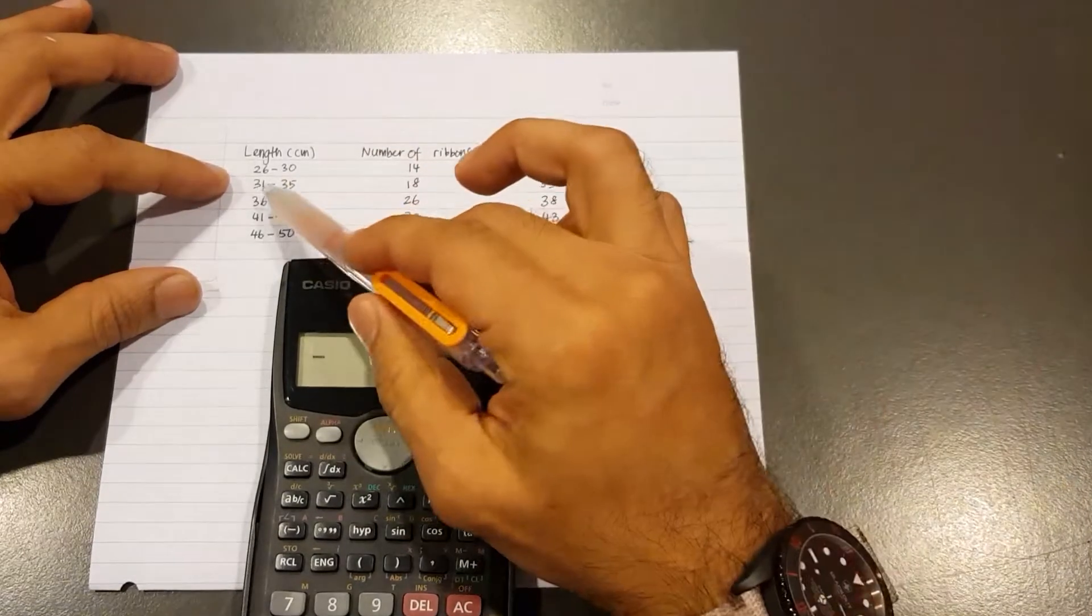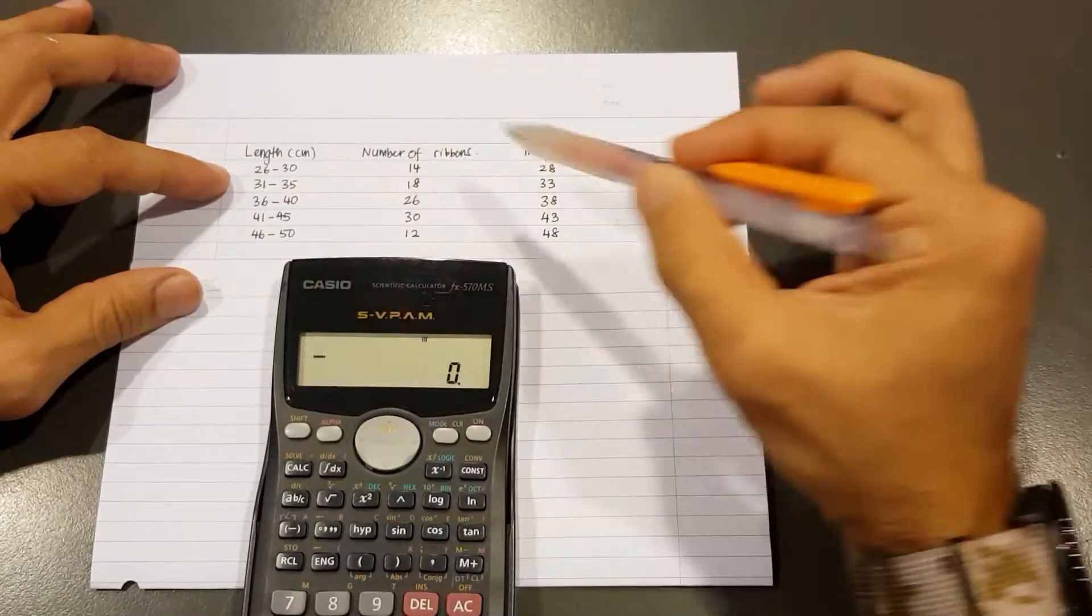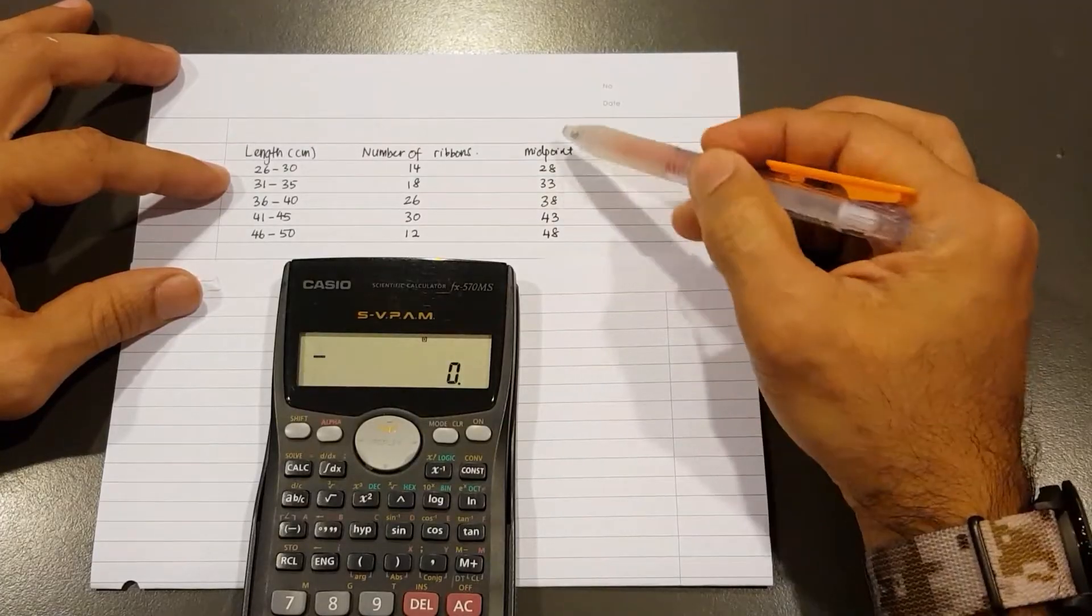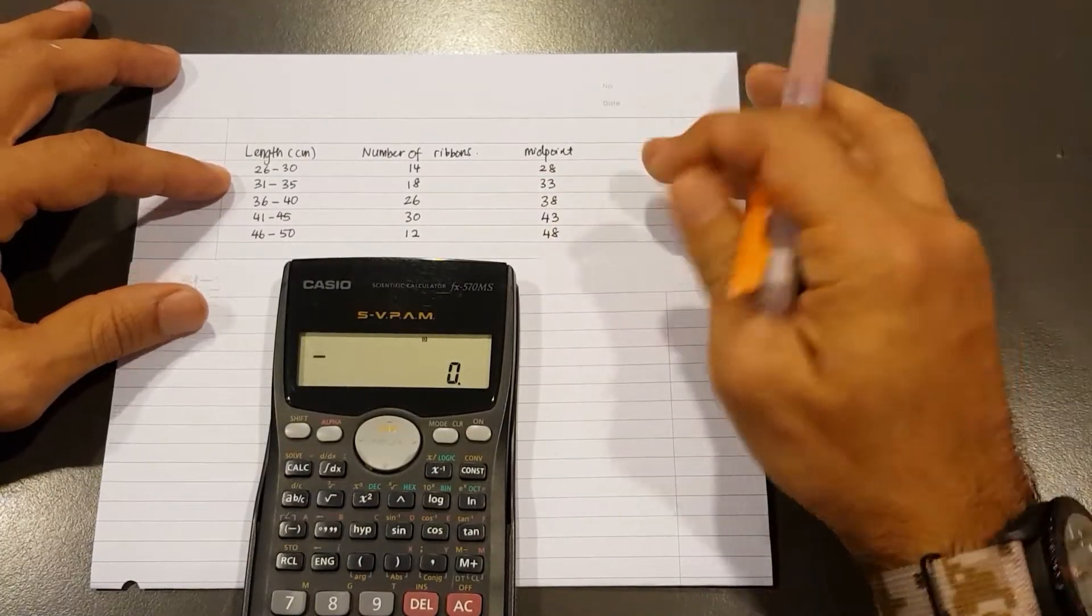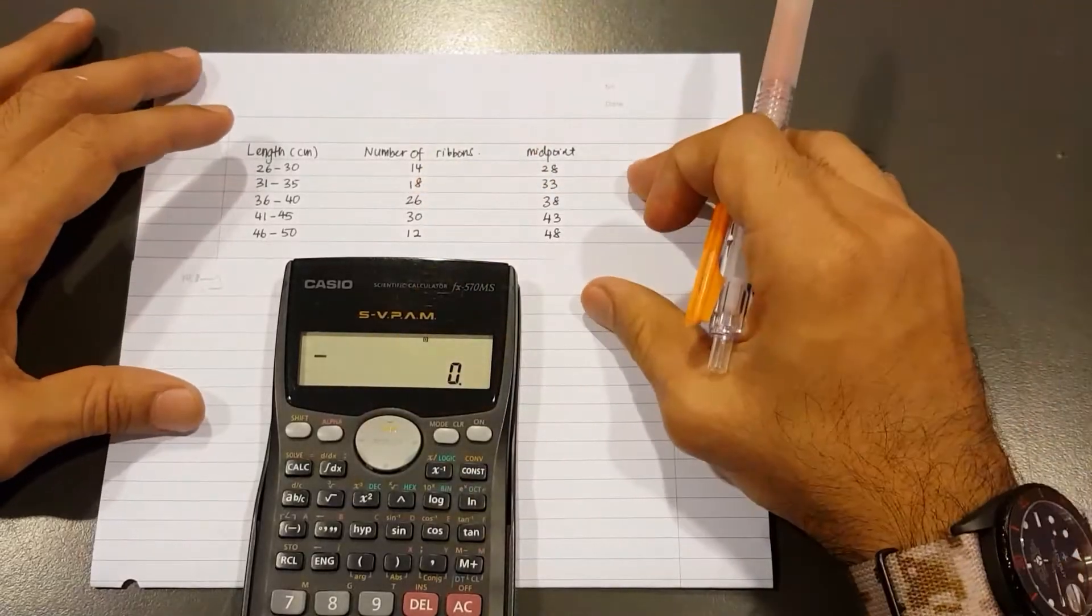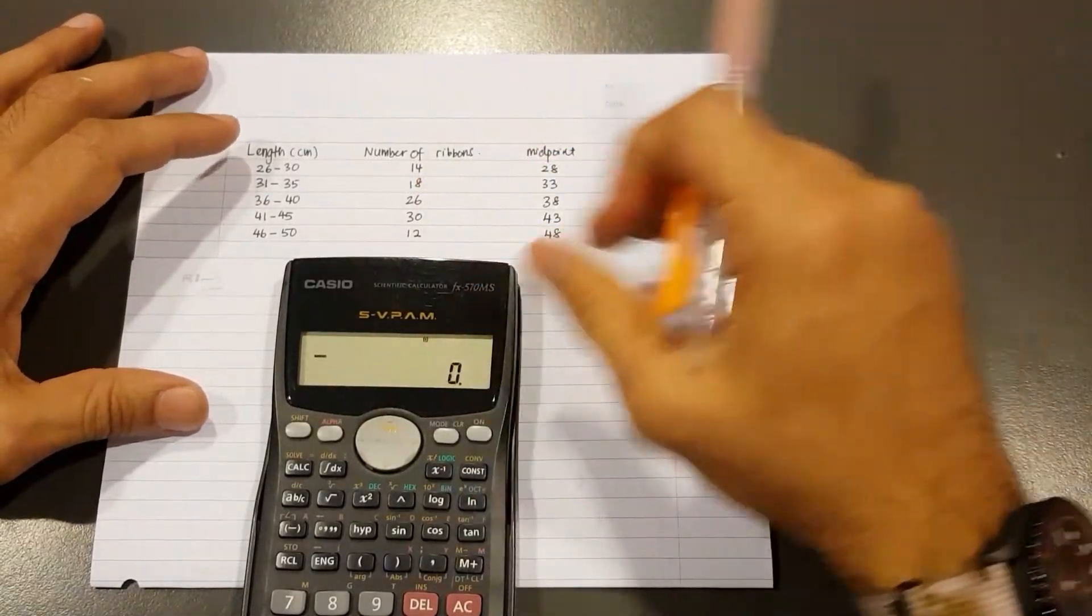For the second midpoint, 31 plus 35 divide by 2, and I get 33. And we go the same steps for the others as well. Now obviously in the exam, we will need to show the steps.